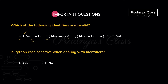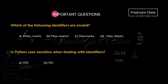In the second option, we are using a special symbol — exclamation — so this is also invalid. Look at the third option — this identifier follows all the rules, so this is valid. Even the last option satisfies all the criteria and is also valid. So the invalid identifiers are in options A and B. Moving to the second MCQ: is Python case sensitive when dealing with identifiers? The correct answer is yes. An identifier written with capital letters is completely different from one with lowercase, so all three identifiers shown are different.